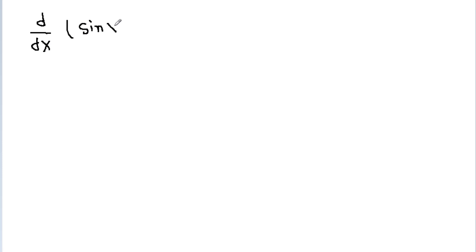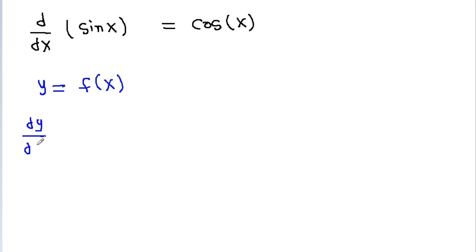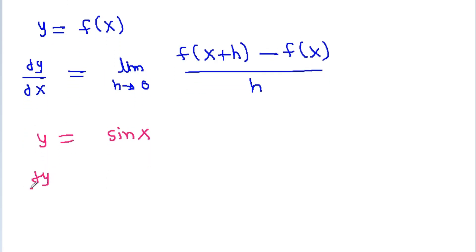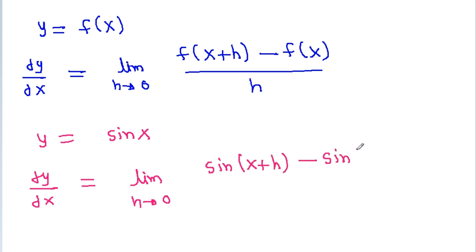Now we have to prove that dy by dx of sin x is equal to cos x. For y equal to sin x, dy by dx equals the limit as h tends to zero of sin of x plus h minus sin x, all over h.